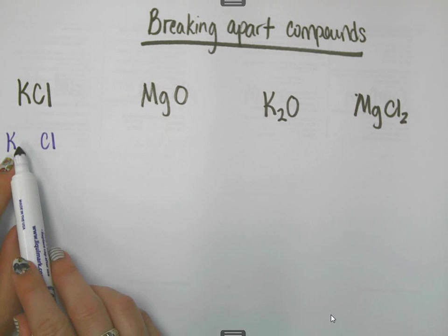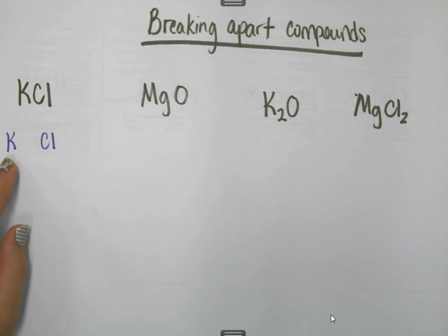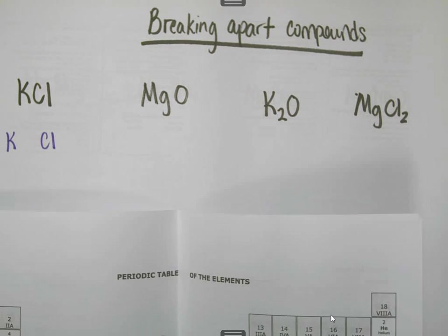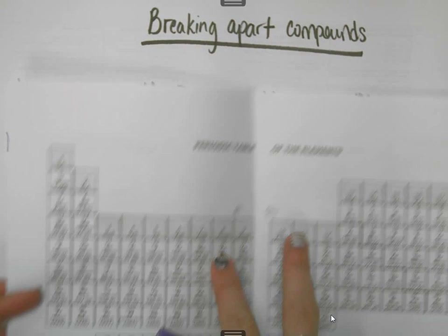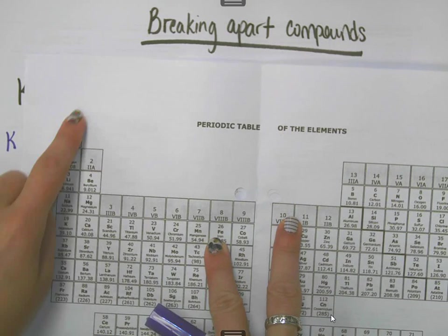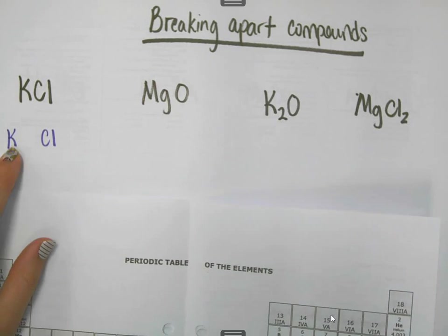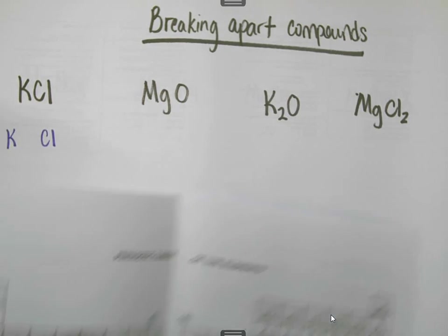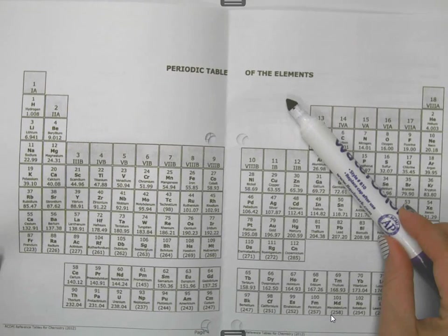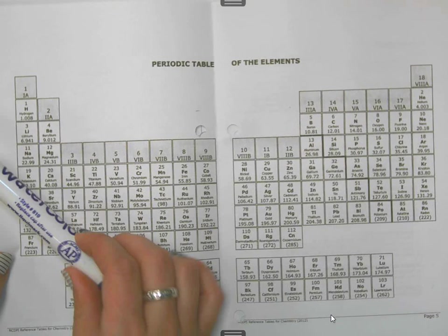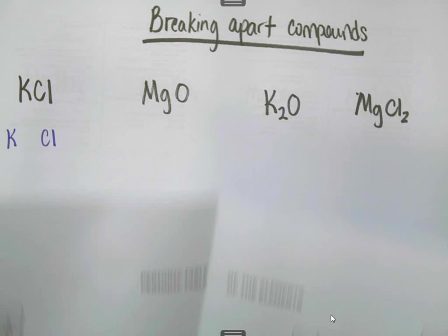How we determine the charges was using the periodic table. So if you go back in time and you look at the periodic table, how I know potassium's charge is I find it right here. It's in group one, which means it has one valence electron. I know that potassium is a metal, and I know that because it is to the left of the stair step right here, and everything to the left of the stair step is a metal.